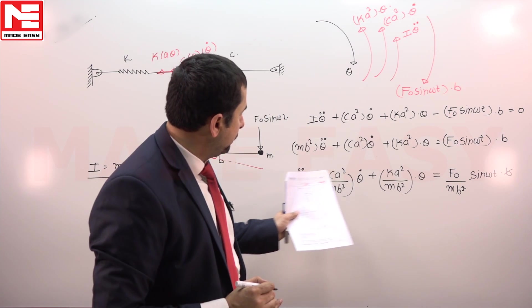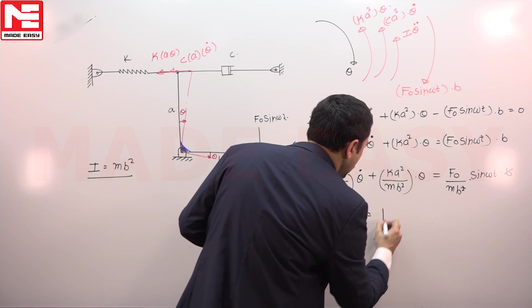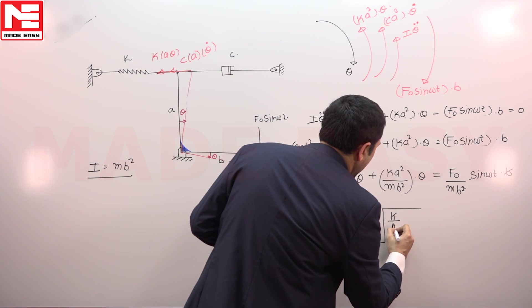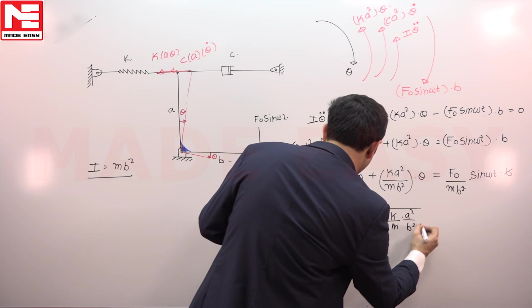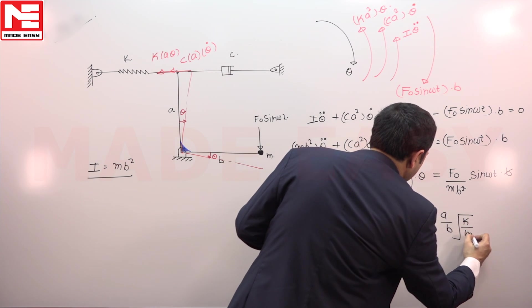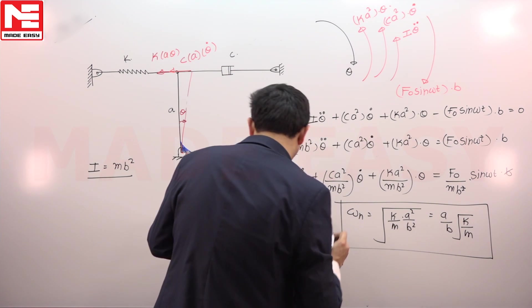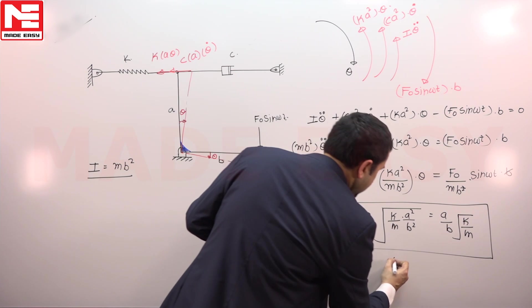We know very well if the theta double dot coefficient is one, then the coefficient which is coming with theta is omega n square. So this is omega n will be under root of k by m into a square by b square, which is a by b under root of k by m. So the right answer for this problem is a.